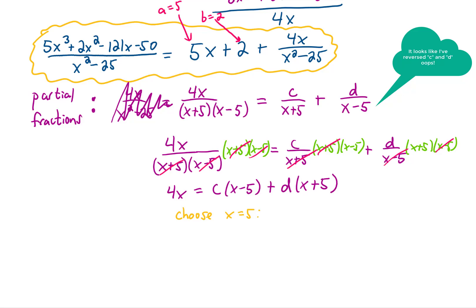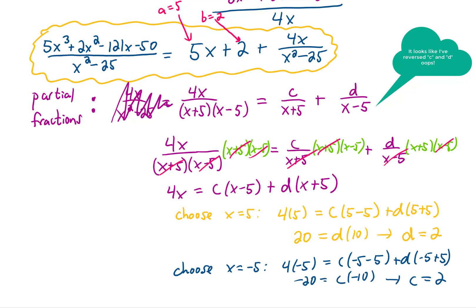Note that if we choose x equals 5 and plug that into this equation, we get our c term to zero out, and we pretty quickly get d equals 2. If we choose x equals negative 5, that will zero out our d term, and we pretty quickly get c equals 2.